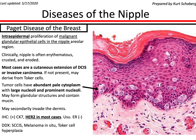Paget disease involves the nipple epidermis, and you'll have an intraepidermal proliferation of malignant glandular epithelial cells in the nipple areolar region. These cells will have prominent nucleoli and pale cytoplasm compared to the benign background epidermis. It may form glandular structures and may contain mucin.